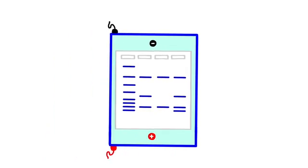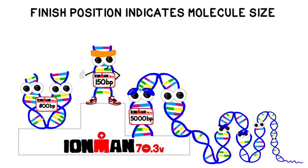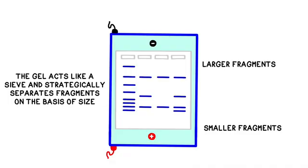The gel has acted like a sieve to strategically slow the movement of the DNA molecules, allowing us to draw conclusions about them. Smaller molecules are less impeded by the gel mesh than larger molecules. As a result, the shorter DNA fragments will move farther than the longer, bulkier ones in a given amount of time. In this manner, DNA fragments in a solution are separated on the basis of size.